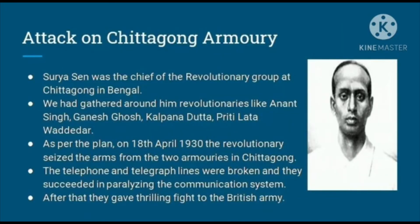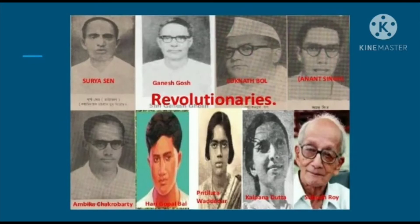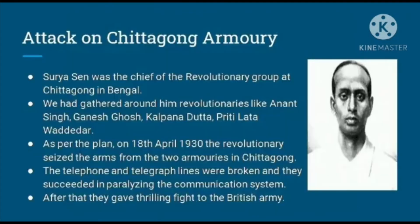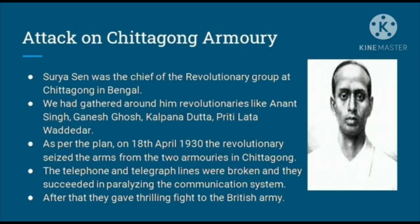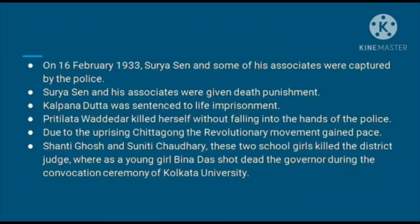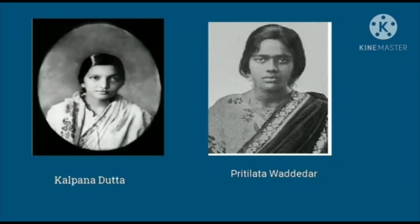Surya Sen was the chief of the revolutionary group at Chittagong in Bengal, who had gathered revolutionaries like Anand Singh, Ganesh Ghosh, Kalpana Datta, and Preeti Lata Wadedar. On 18th April 1930, the revolutionaries seized arms from two armories in Chittagong — armories being places where arms and ammunition like guns and bombs are kept. They also uprooted telegraph and telephone lines and successfully paralyzed the communication system. On 16th February 1933, Surya Sen and some of his associates were captured. Surya Sen and his associates were given the death punishment. Kalpana Datta was sentenced to life imprisonment, and Preeti Lata Wadedar killed herself without falling into the hands of the police.